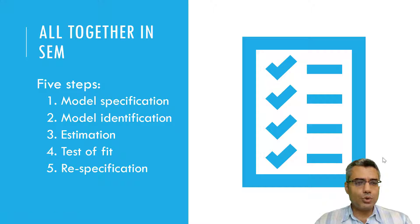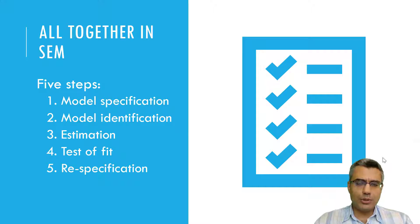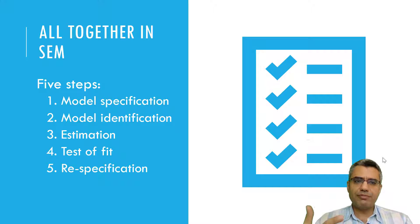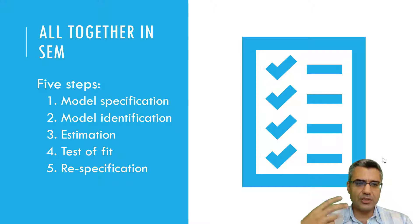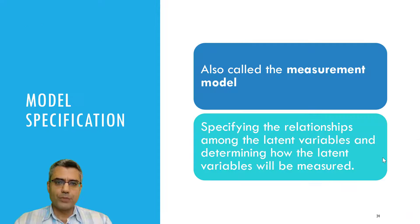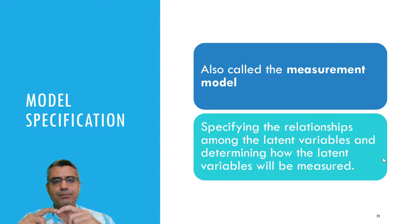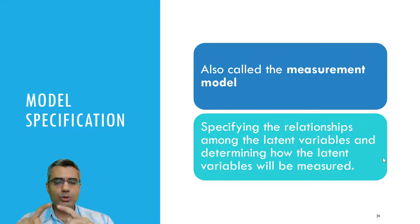In this video, I'd like to share the five steps to conduct structural equation modeling. No need to memorize them — I just want to introduce a few terms. The five steps are: model specification, model identification, estimation, test of fit, and re-specification.